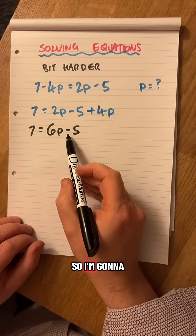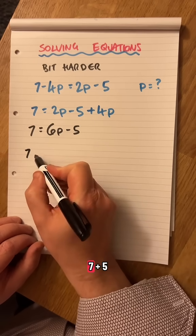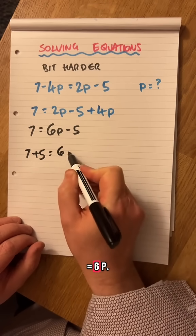I've still got 6p minus 5 on there. And I want to get rid of the 5, it's minus there, so I'm going to add it to this side.